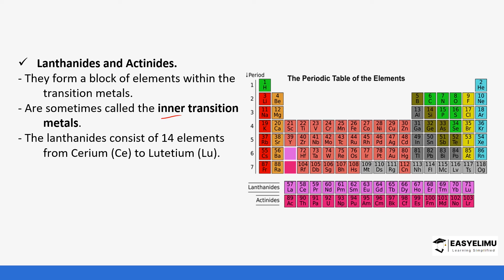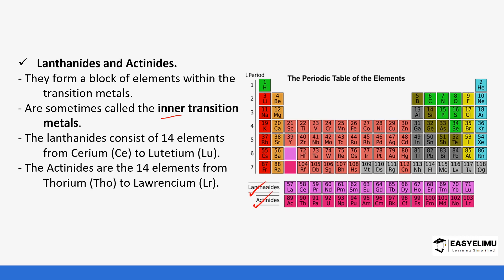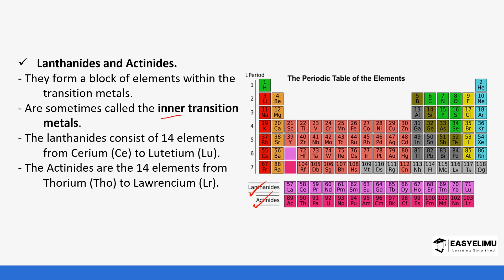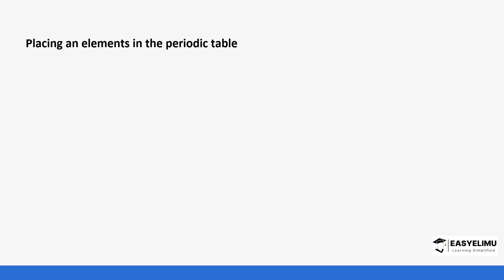The lanthanides and actinides are part of the transitional metals but are referred to as the inner transition elements because there are 14 of them. The lanthanides run from cerium to lutetium, and the actinides also number 14, running from thorium to lawrencium. We are not going to pay a lot of attention to them at this level — they will be discussed in a later level.